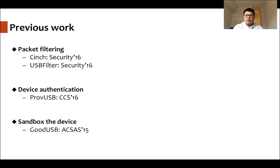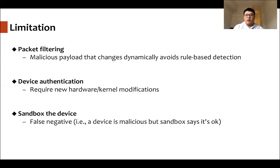There are many previous works that tried to solve this problem. Cinch and USB filter use packet filtering, which means they set up specific rules to filter out certain traffic flows of USB devices. ProveUSB uses device authentication to see whether a device is trusted or not. And GoodUSB sandboxes the device and monitors its behavior. However, all this previous work has some limitations. The first is that malicious payloads that change dynamically could avoid rule-based detection, making packet filtering less powerful. Device authentication usually requires new hardware or kernel modifications. And sandboxing devices can sometimes give false-negative results, meaning a device is malicious but the sandbox says it's okay.